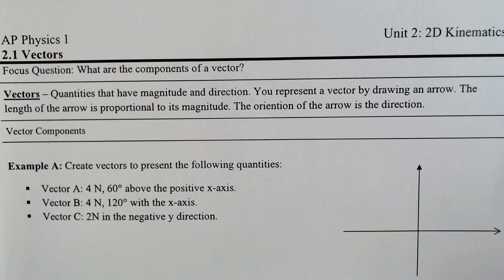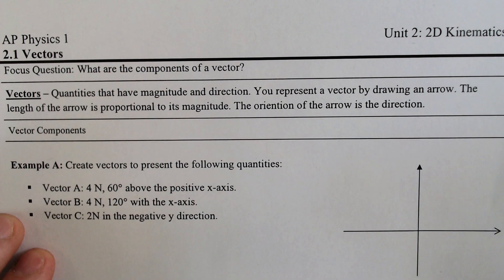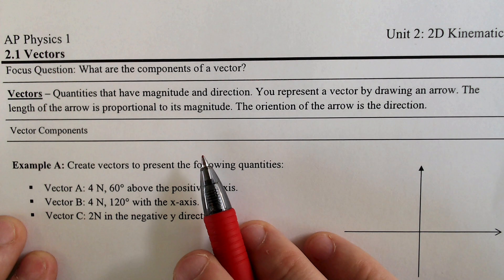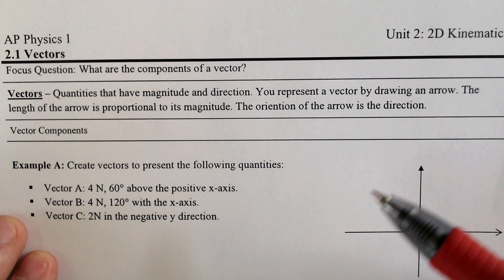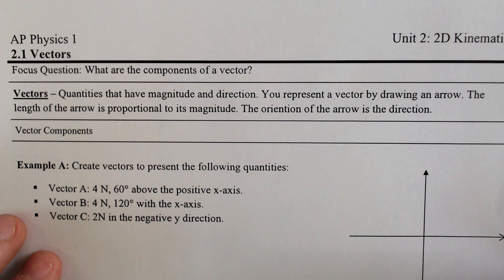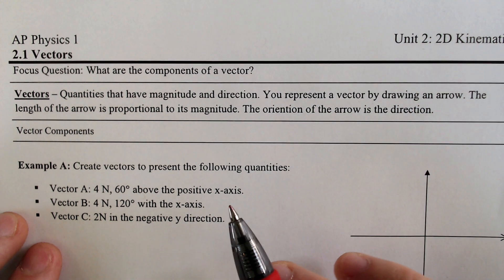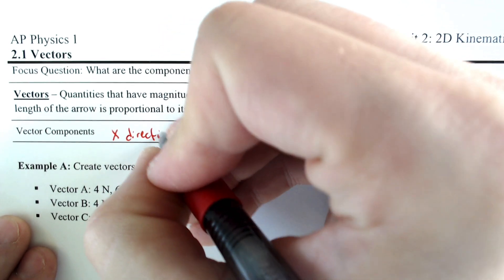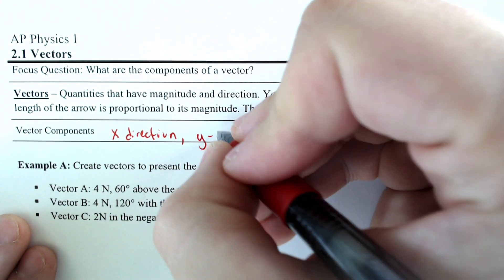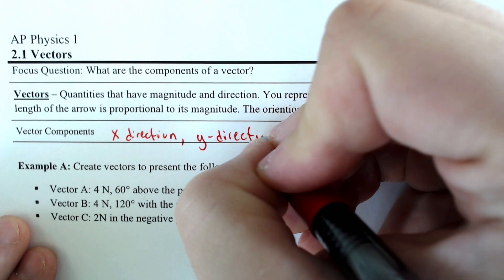So a vector is something that has a direction and a magnitude, much like what we talked about before with velocity. So velocity is technically a vector, and the components of a vector would be the x-direction and the y-direction put together.